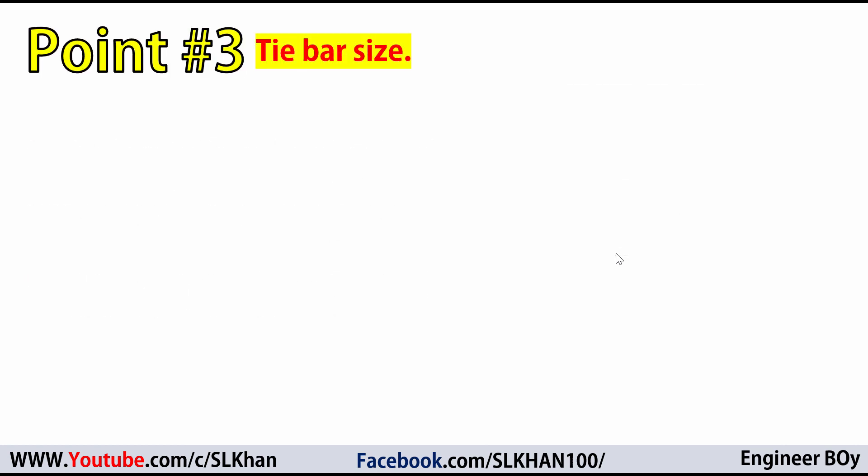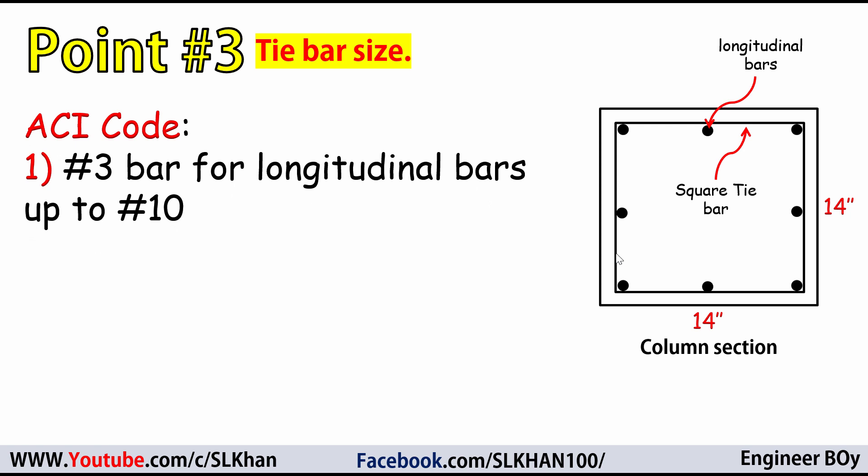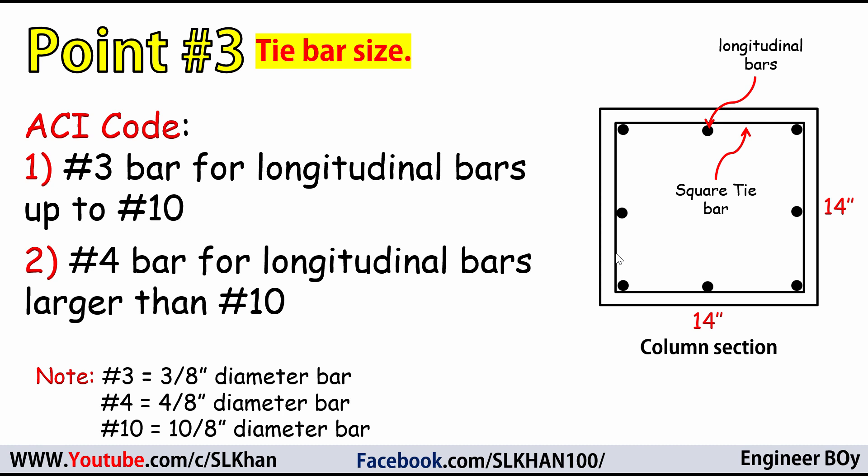Point number 3 is about tie size. According to ACI, a number 3 bar (3/8 inches) can be used for the tie when main bars are up to number 10 (10/8 inches) in diameter. However, if the main bars are larger than number 10, then at least a number 4 bar (4/8 inches) must be used for the tie.